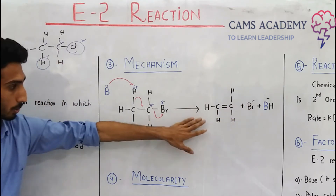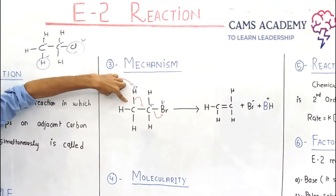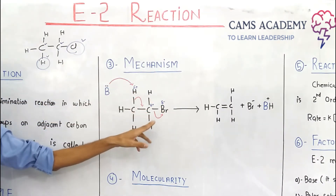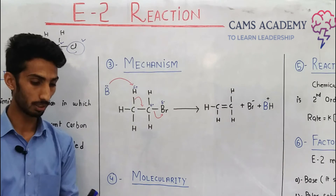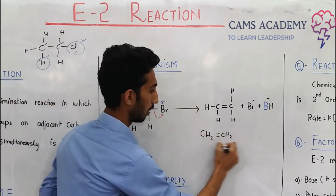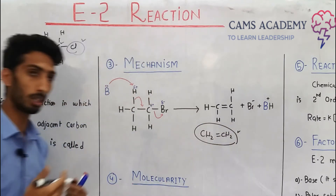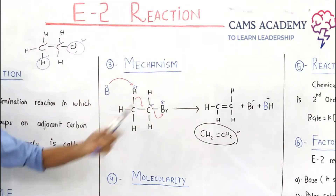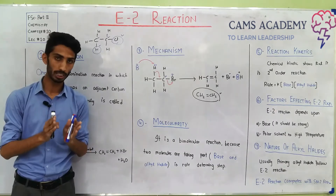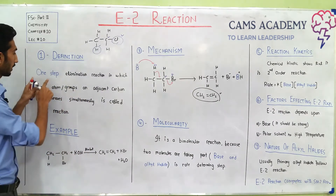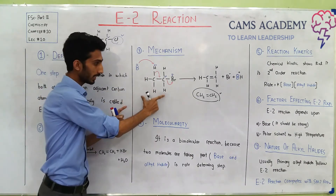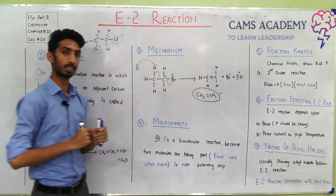The resulting structure has hydrogen and Br both removed from adjacent carbons, forming a double bond between the two carbons. This gives CH₂=CH₂ (ethene), plus Br⁻, plus BH (the base picks up the hydrogen). This is a one-step elimination — both groups removed in a single step to give the product.